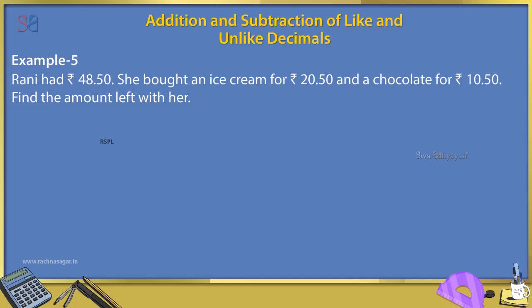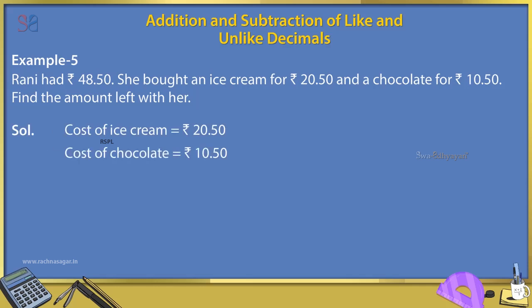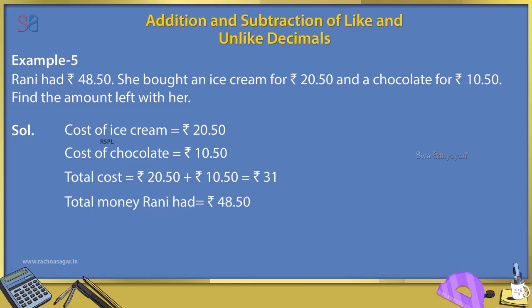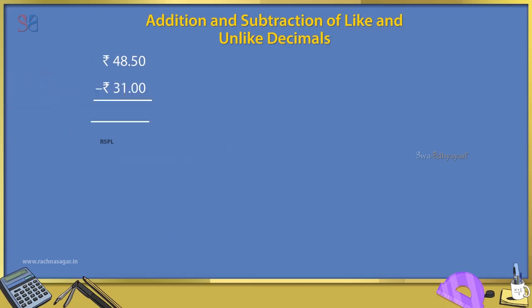Example 5: Rani had Rs. 48.50. She bought an ice cream for Rs. 20.50 and a chocolate for Rs. 10.50. Find the amount left with her. Solution: Cost of ice cream = Rs. 20.50. Cost of chocolate = Rs. 10.50. Total cost = Rs. 20.50 + Rs. 10.50 = Rs. 31.00. Money left = Rs. 48.50 − Rs. 31.00 = Rs. 17.50.